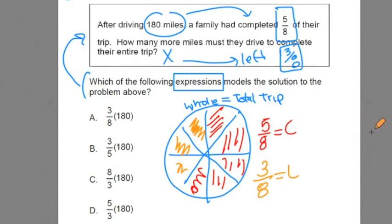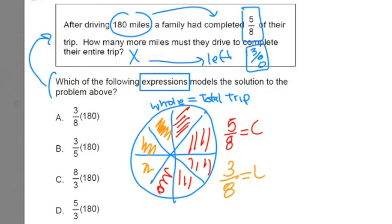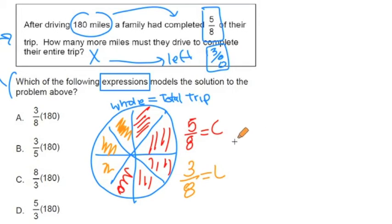Now, I'm going to use this model to represent what's completed and what's left a little bit differently. We could say, in terms of slices, how many slices of this pizza pie that represents the whole trip, how many slices did they complete? You'd say, oh, out of the 8 they completed, they completed 5. So we could write that as 5 complete. And how much was left? Oh, out of the 8, 3 was left.